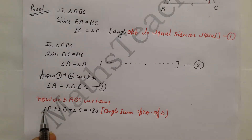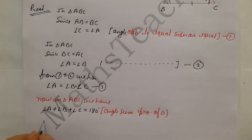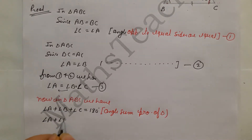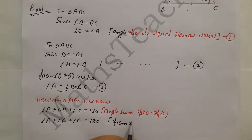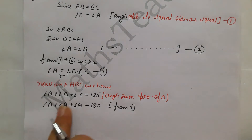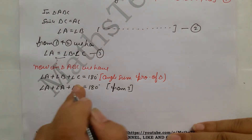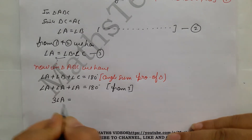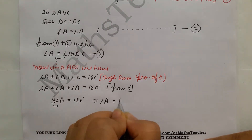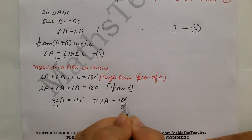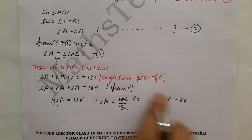Since angle A equals angle B equals angle C, we substitute to get angle A plus angle A plus angle A equals 180 degrees. That is 3 times angle A equals 180 degrees. Dividing both sides by 3, we get angle A equals 60 degrees.